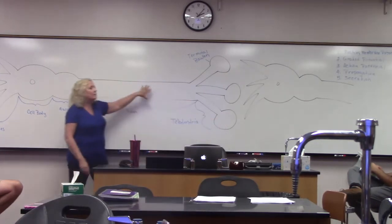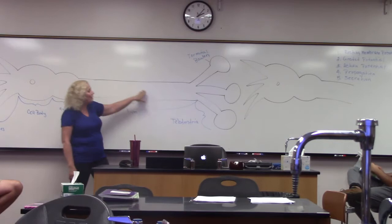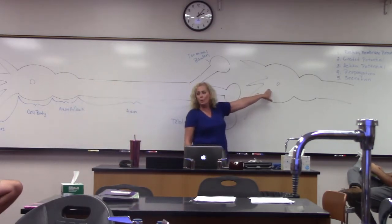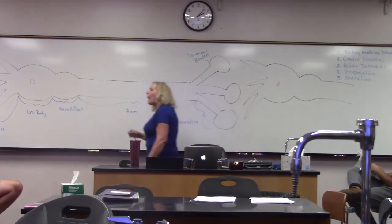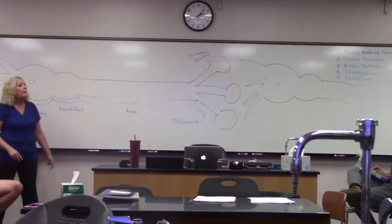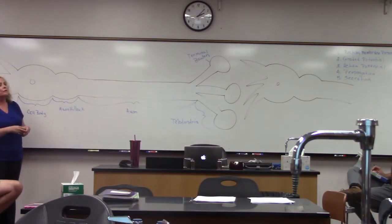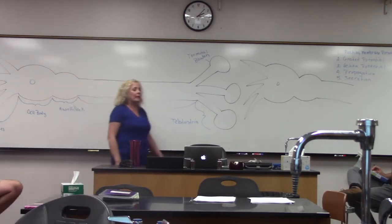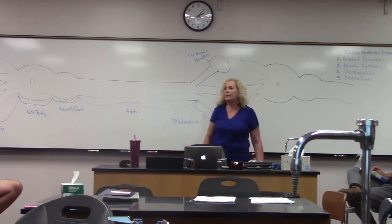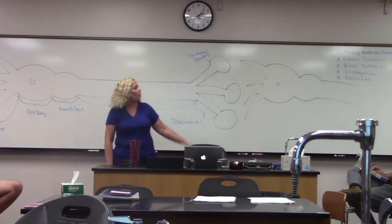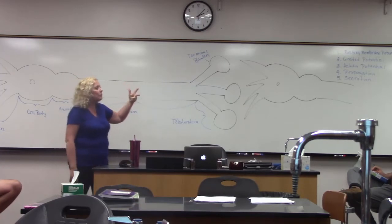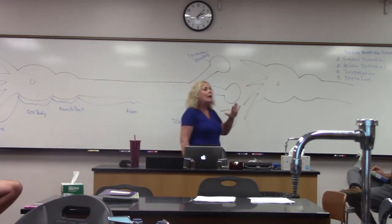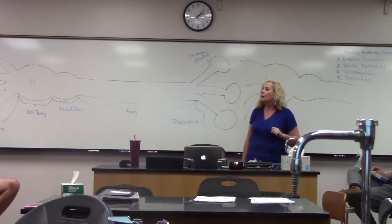Part of the telodendria are the terminal boutons. This is neuron number one, so this is our presynaptic neuron, and this is neuron number two, our postsynaptic neuron. We're going to start talking about how neurons communicate, beginning with resting membrane potential. This is an essay on exam number two — definitely an essay, five parts: resting membrane potential, graded potential, action potential, propagation, and secretion. Worth 50 points.